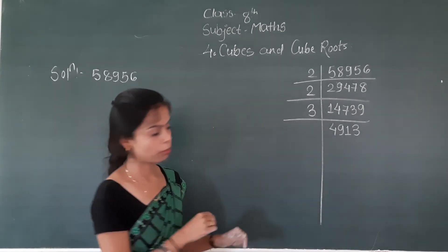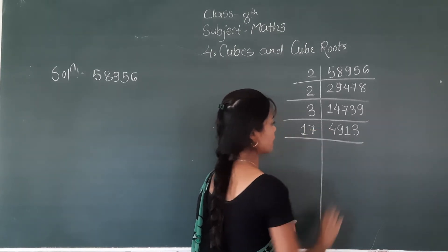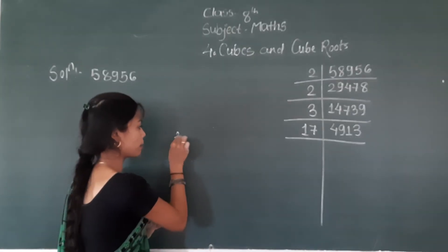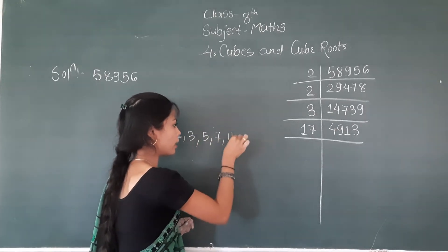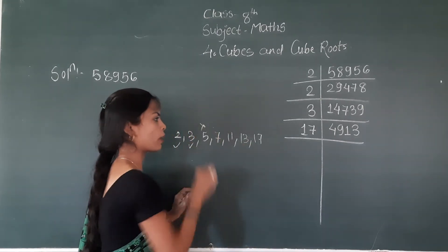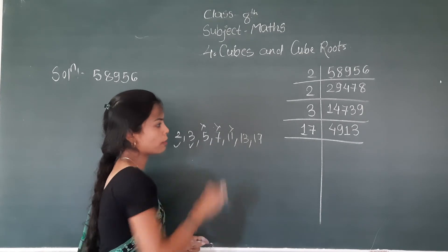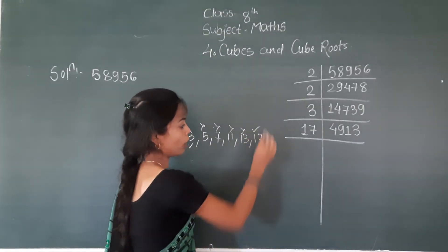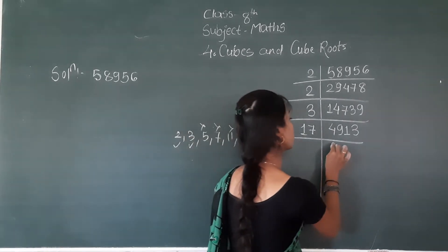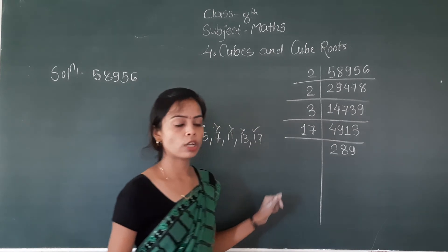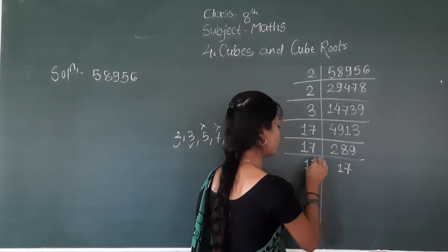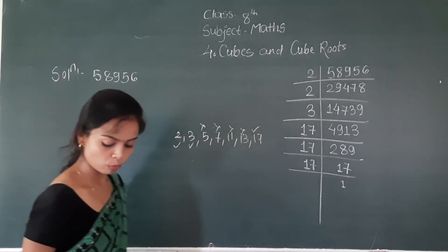Now divide this number by 17. The number 4913 is not divisible by 5, not divisible by 7, not divisible by 11, not divisible by 13 — so we switch to 17. This number is divisible by 17. Divide 4913 by 17, the answer is 289. Again divide 289 by 17, your answer will be 17. Again divide 17 by 17, your answer will be 1.